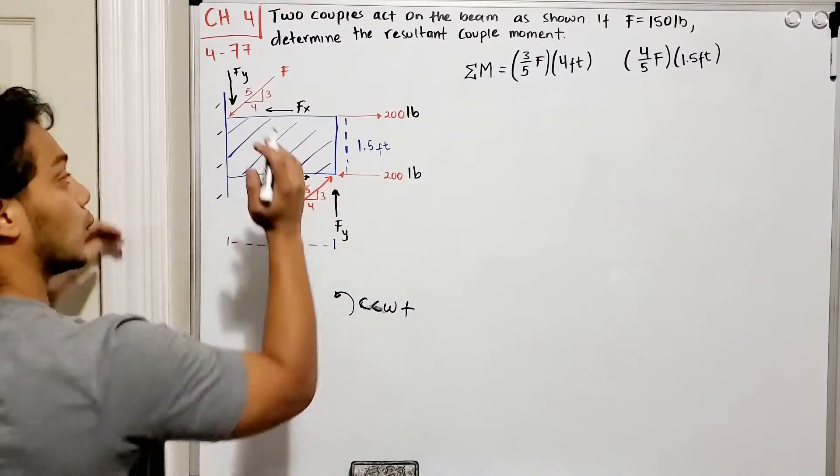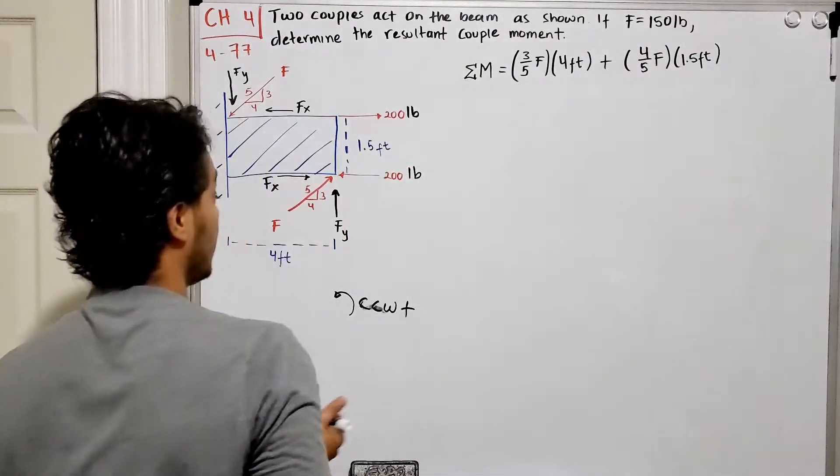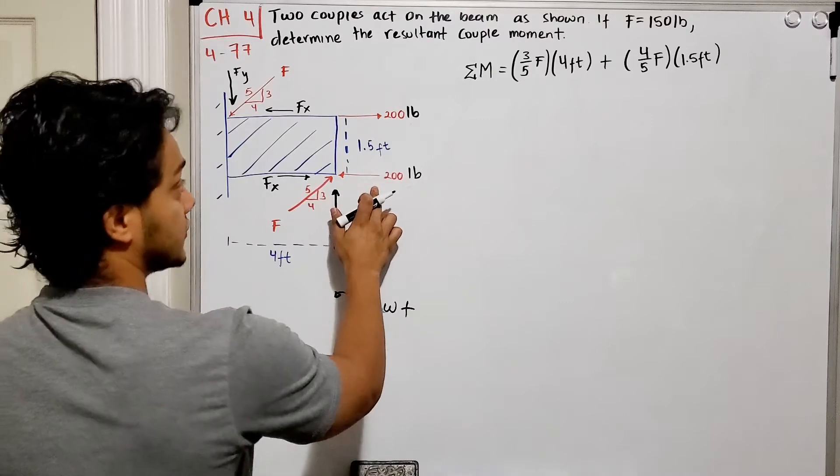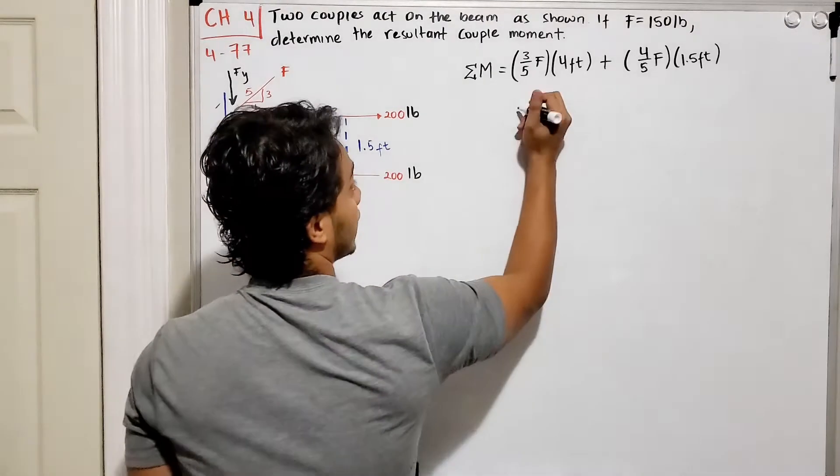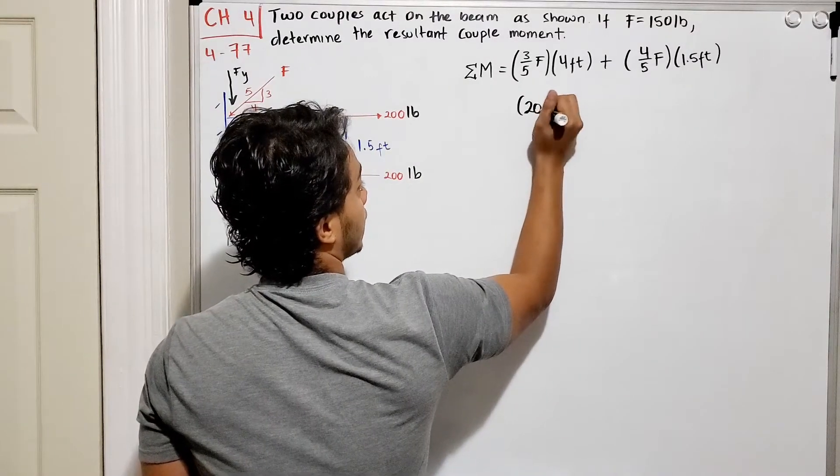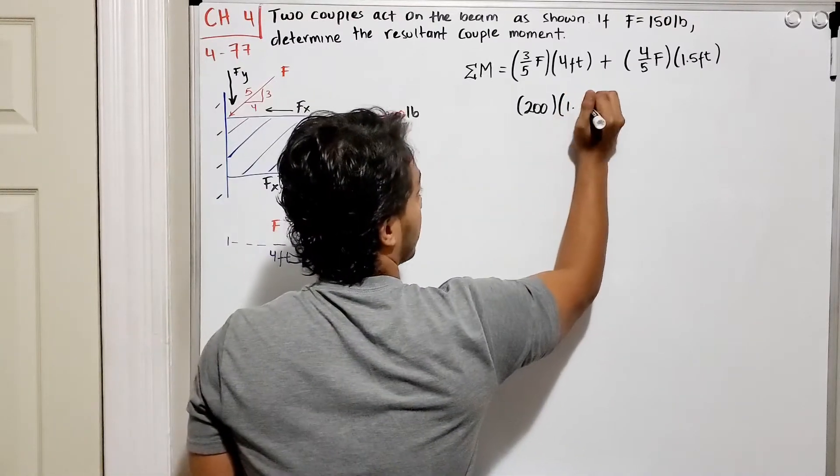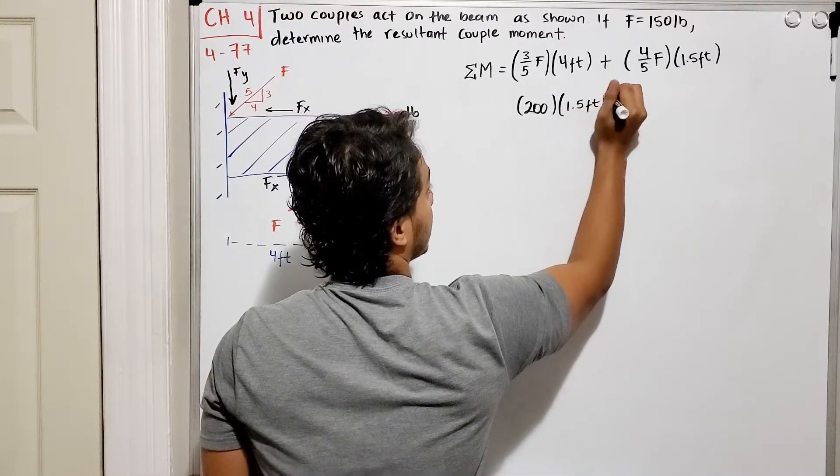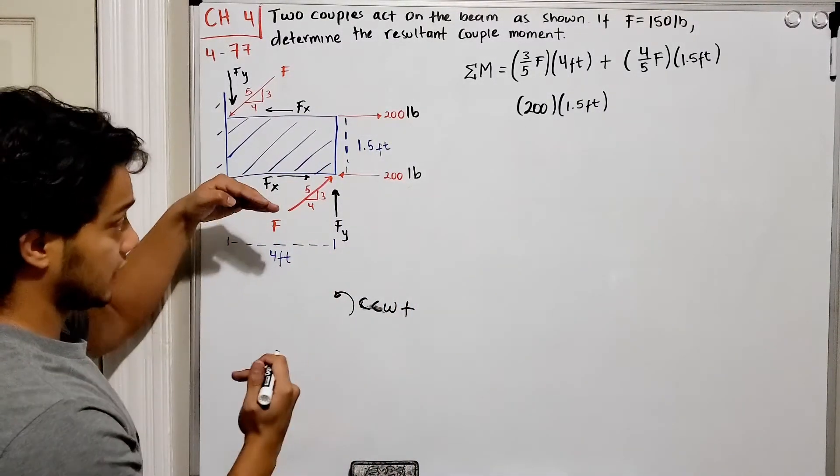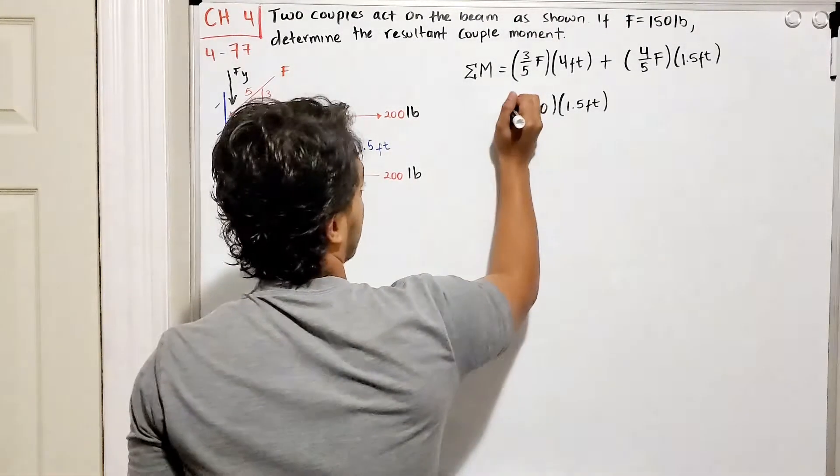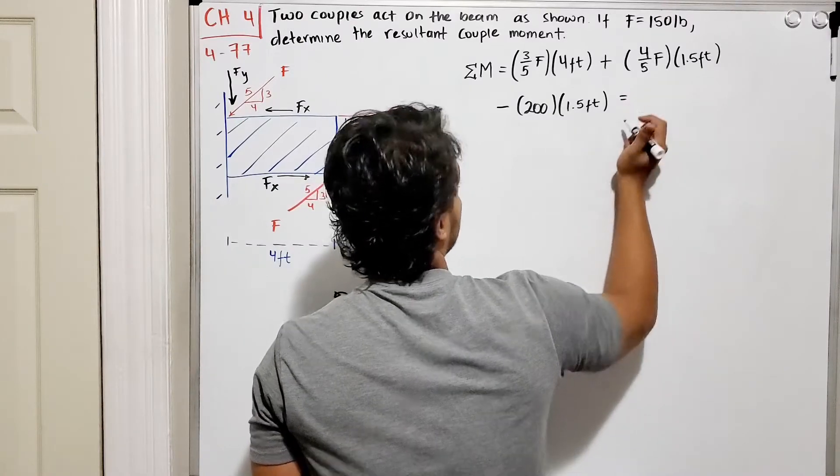What about our 200 pound forces? The 200 pounds have the same distance, so this is going to be 200 multiplied by the distance which is 1.5 feet. What is the direction of this one? These ones are counterclockwise, and for counterclockwise I'm gonna put a negative direction.